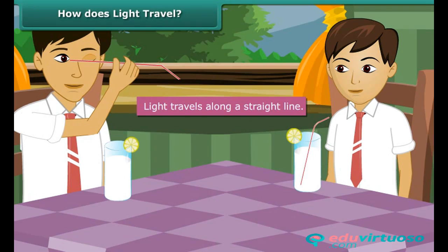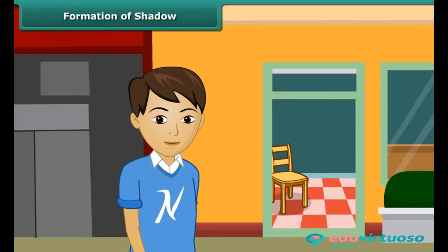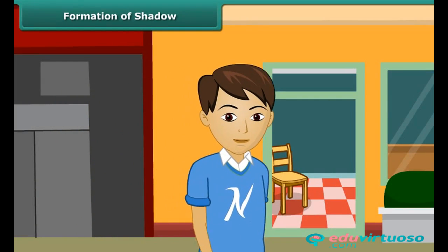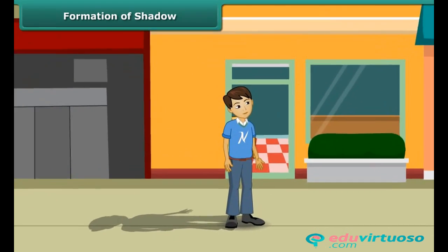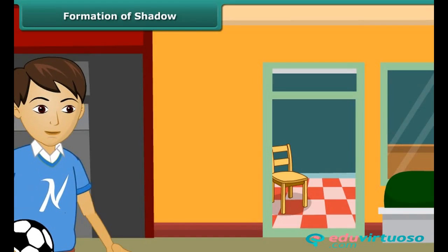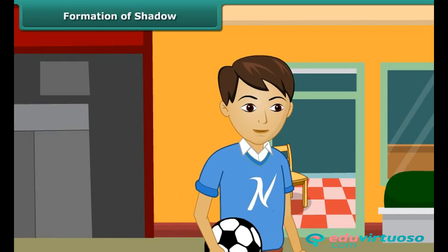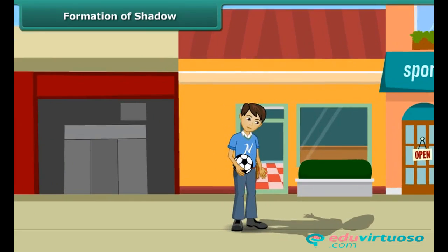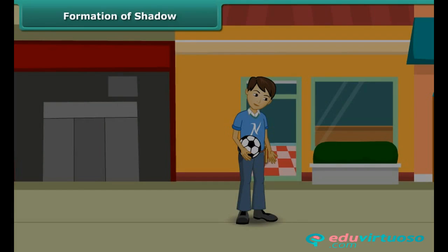On a Sunday morning you are on your way to the market. The sun is shining bright on your face and you see your shadow on the ground behind you. That same evening in the park, the sun's rays fall on your back and you see your shadow on the ground in front of you. After a while the sun sets and there are no more shadows.